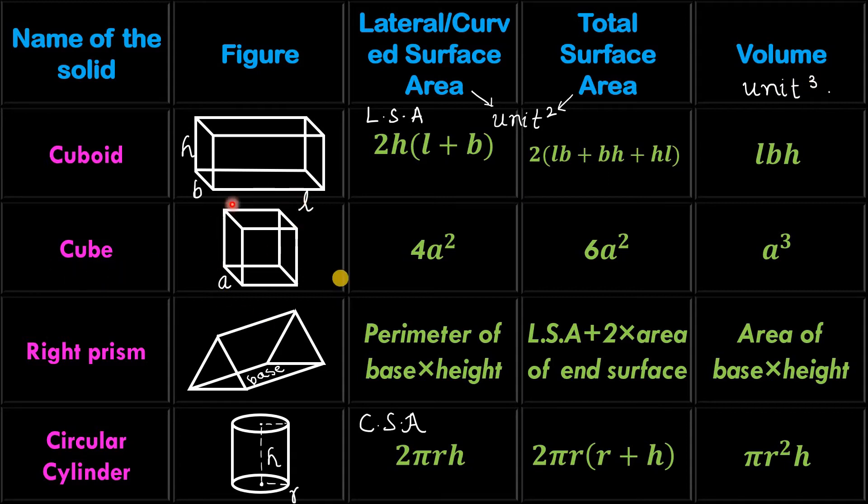This is cube and it is its shape. It's also a curveless shape, so we consider LSA. Its formula is 4A square. And total surface area is 6A square. And its volume A cube.